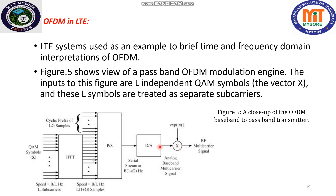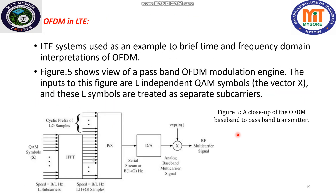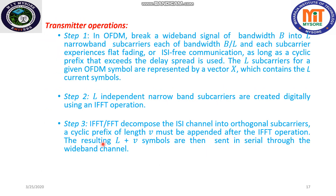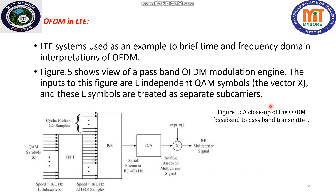This RF signal contains all the sub-carriers and can then be transmitted. At the receiver, the already-discussed operations are performed: deleting the cyclic prefix, serial-to-parallel conversion, L-point FFT, and frequency equalization. All these blocks together allow the signal to be estimated.